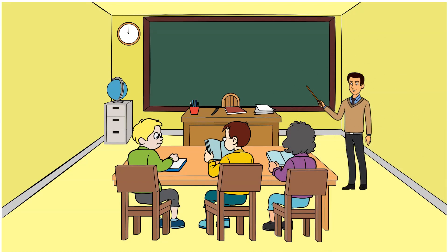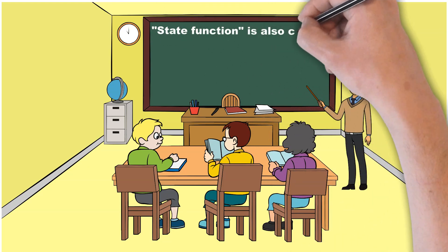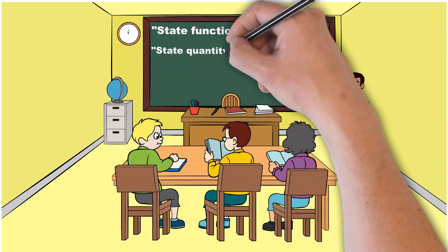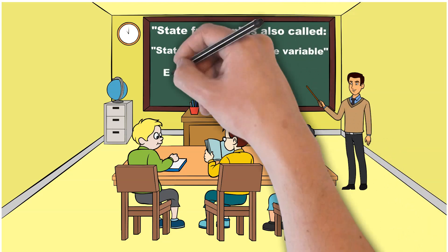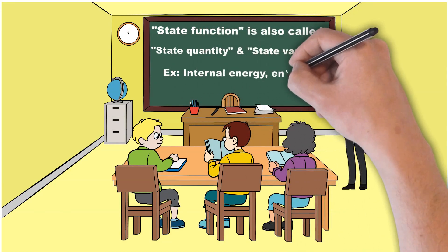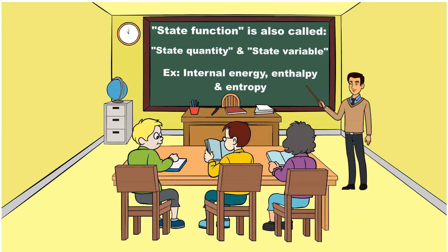A state function is also called a state quantity and state variable. In thermodynamics, a state quantity is a property of a system that depends only on the current state of the system and does not depend on the way in which the system acquired that state. A state function describes the equilibrium state of a system. Examples of state quantities include internal energy, enthalpy, and entropy, because they describe quantitatively an equilibrium state of a thermodynamic system irrespective of how the system arrived in that state.